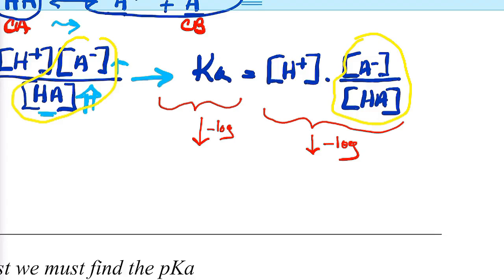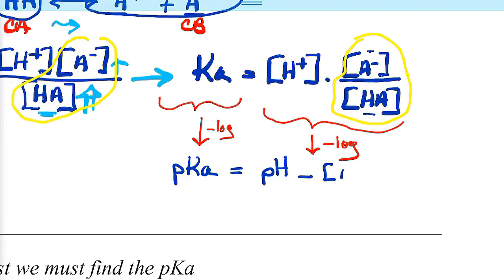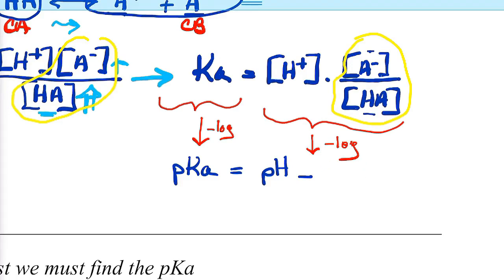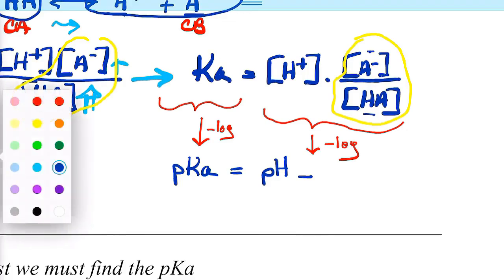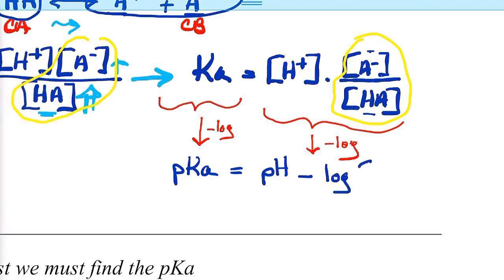The negative log of Ka is the pKa. Separating the expressions, the negative log of H⁺ is pH. Then we have the negative log of the ratio A⁻ over HA — the conjugate base over the conjugate acid. So the pKa equals pH plus the negative log of A⁻ over HA. That's the ratio of the concentration of the conjugate base to the conjugate acid.